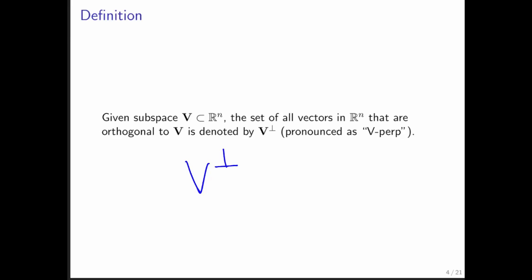So you're given a subspace V, now we have a way of easily identifying the set of all vectors in R^n that are orthogonal to V.